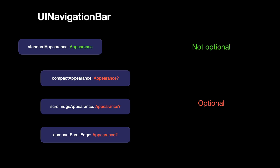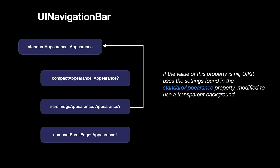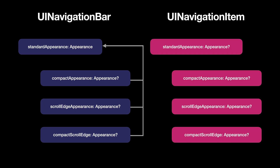But if there is both global styling and local styling applied, what would be the result? Let's take a look at the hierarchy of styling. For UINavigationBar, the appearance properties are optional except for the standard appearance. By default, for example, the scroll edge appearance is nil. Apple's documentation states: if this value is nil, UIKit uses the settings found in the standard appearance and modifies them to use a transparent background — meaning the scroll edge appearance inherits the styles of the standard appearance. When we introduce UINavigationItem into the equation, all its properties are optional. Their purpose is to override, only for this view controller, the specific style of the equivalent appearance of the navigation bar. This concludes the theory.